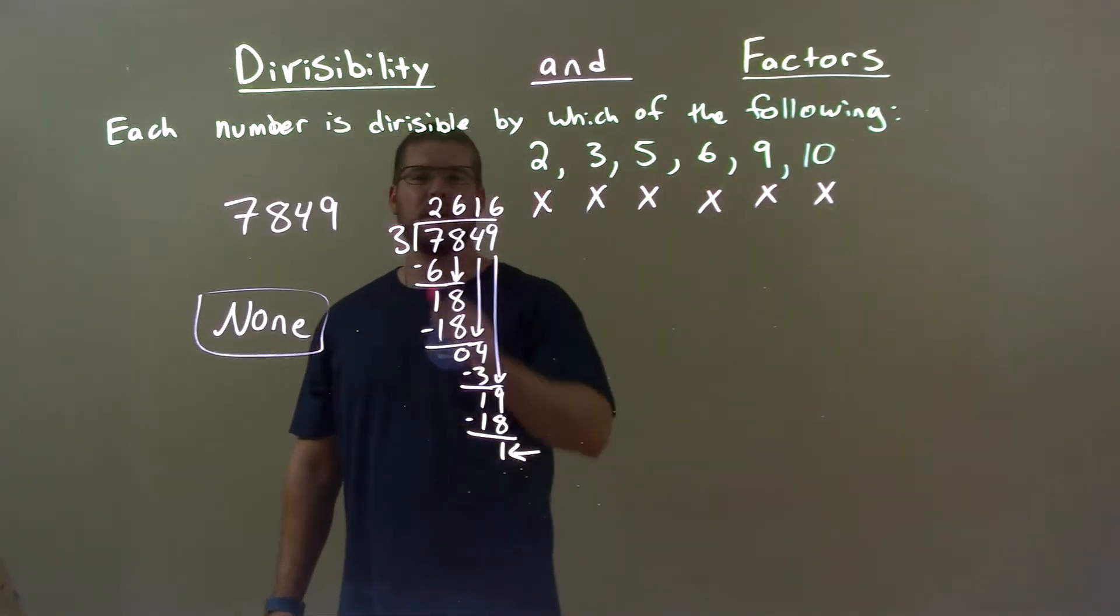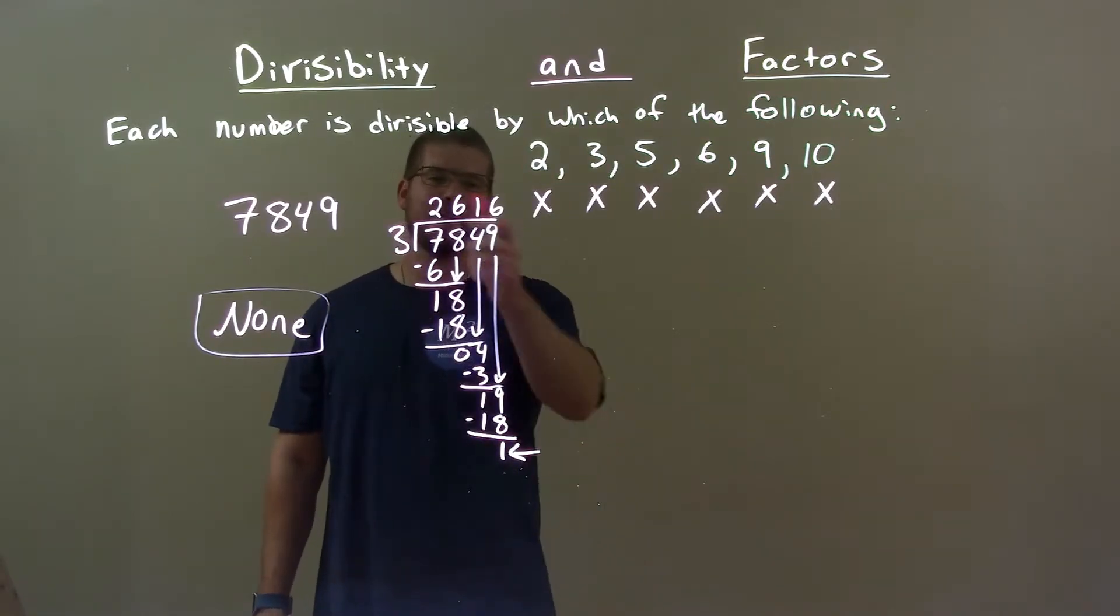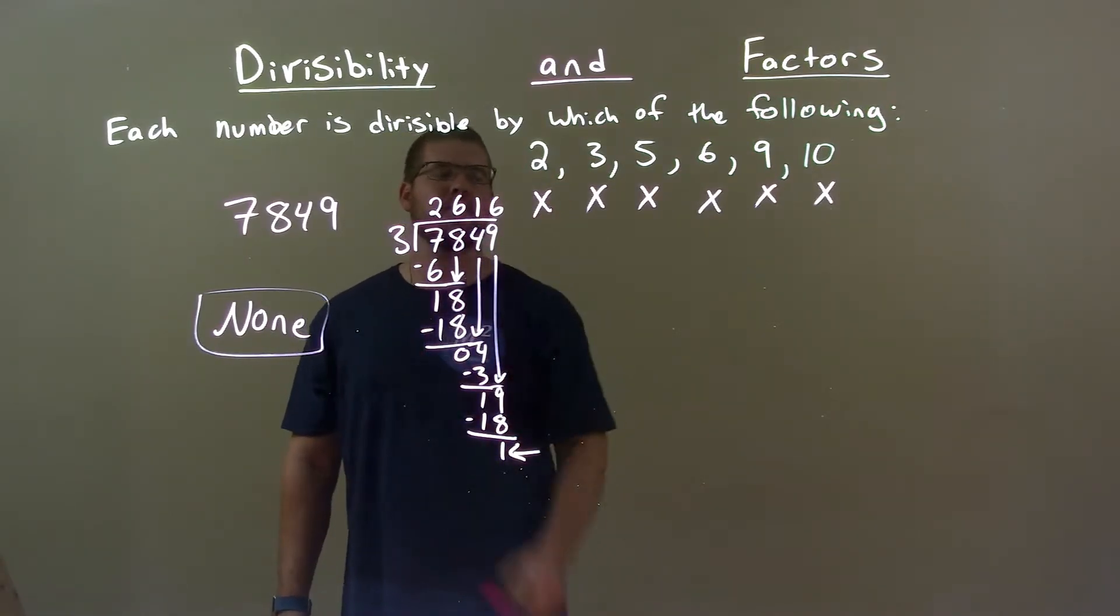Tried 3. Long division with 3 gave us a remainder of 1. Did not go in evenly, so 3 does not work.